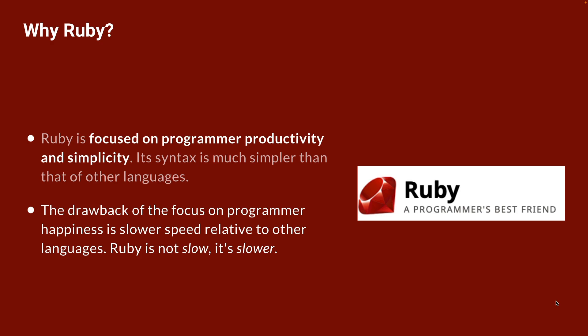The drawback of this focus on programmer happiness is slower speed relative to other languages. To clarify, Ruby is not necessarily slow — it's just slower than other languages, specifically compiled languages like Java and C++. So if you're building something like a financial trading application where every single millisecond is valuable, Ruby is probably not your best bet. But for just about everything else, Ruby is phenomenal, and you can build your program while enjoying the code you write because it's much simpler, more elegant, and less verbose.